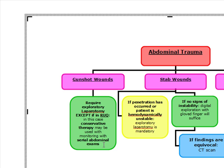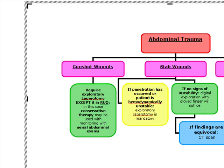Next, stab wounds. First, we want to confirm that penetration has occurred. If penetration has occurred and the patient is hemodynamically unstable, exploratory laparotomy is mandatory. If there are no signs of instability, we perform digital exploration with a gloved finger. If findings are equivocal, we proceed to CT.